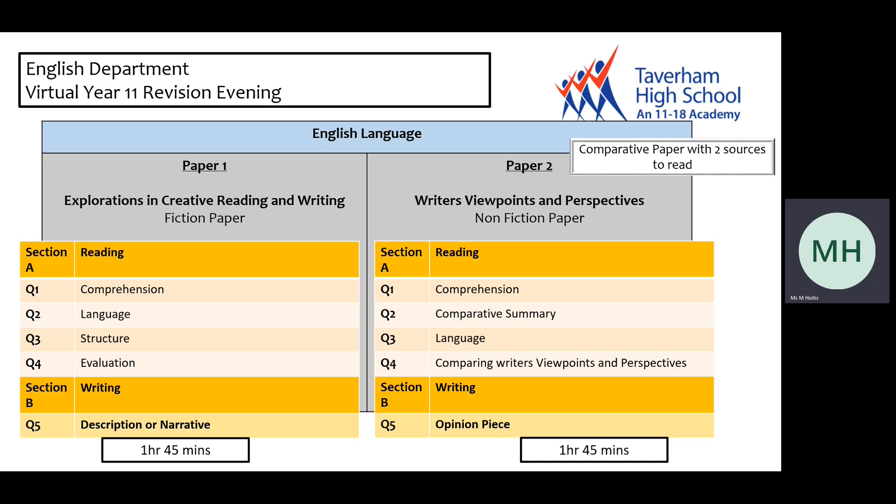The other notable requirement for these exams is section B, the writing component. Both section B's for both papers are worth 50% of the entire paper and will assess students' accuracy and fluency in writing skills, as well as spelling, punctuation and grammar. For language paper one, students will be asked to write creatively, either a description based on an image or a narrative. In paper two, students will be asked to write in the form of a letter, a speech or an article for a particular viewpoint — so it is the opinion piece in section B for language paper two.